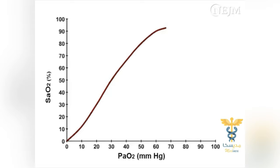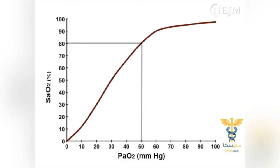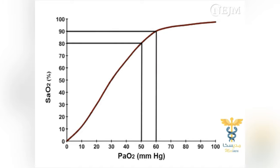The hemoglobin-oxygen dissociation curve shows the relation between PaO2 and SaO2. The affinity of hemoglobin for oxygen varies at different partial pressures of oxygen, and although the relation is not linear, increases in PaO2 lead to higher SaO2. In general, 80% saturation corresponds to a PaO2 of 50 millimeters of mercury, and 90% saturation corresponds to a PaO2 of 60 millimeters of mercury.